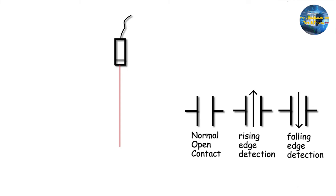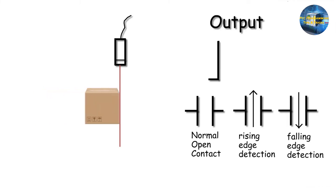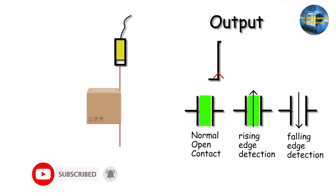Let's see an animation of how rising and falling edge detection works. The moment the front corner of the box is detected by the sensor, it gives an output signal and the normally open contact is closed. However, the rising edge detection contact will be turned on only for one PLC scan cycle — in the next scan cycle it is turned off.